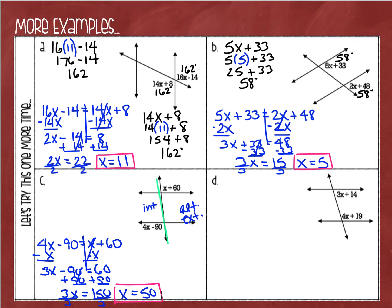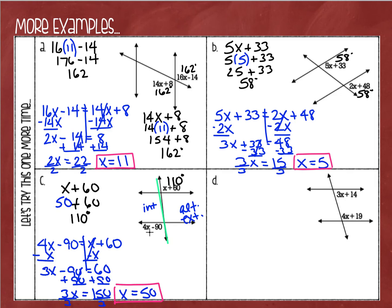Again, these angles do not equal 50 degrees — that's just the value of x. To find the angle measure I substitute x into the expressions. Let's do the easy one: x plus 60. I'll replace x with 50 and add 60, giving me 110. So this angle is 110 degrees. Checking: 4 times 50 is 200, and 200 minus 90 is 110.